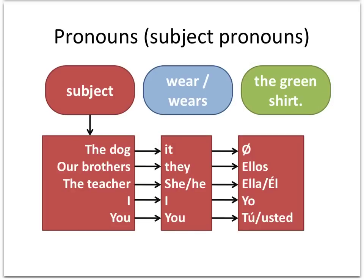You also learned the Spanish equivalents of these. For 'the dog,' if we were going to use 'it,' there is no subject pronoun 'it' in Spanish — it doesn't exist. We have to just leave out the pronoun altogether and go straight to the verb. For 'our brothers,' in saying 'they,' we can say 'ellos.' For 'she' and 'he': 'ella' and 'él.' For 'I': 'yo.' For 'you': 'tú' or 'usted.'